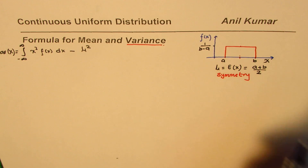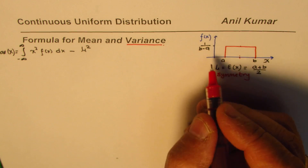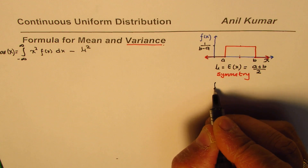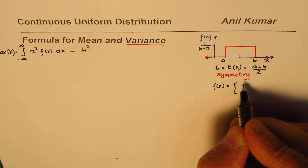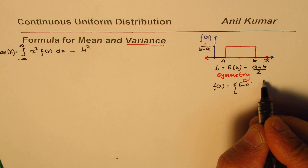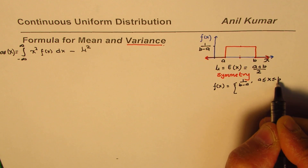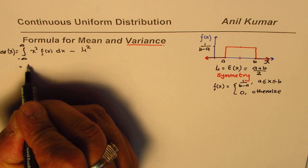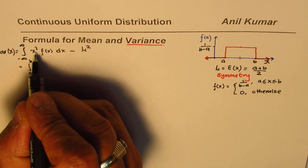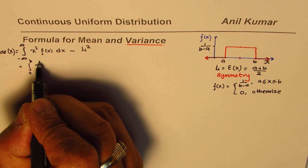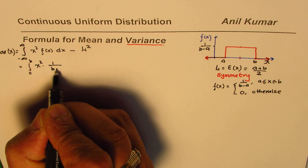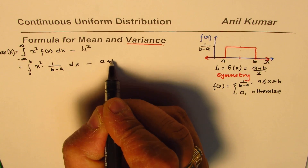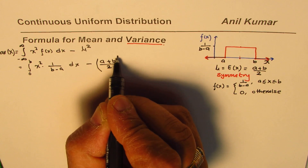In our case, the function f(x) is defined as 1/(b - a) when x is between a and b, and 0 otherwise. So the integral for variance reduces to the integral from a to b, because the function is 0 everywhere else. This becomes the integral from a to b of x² times 1/(b - a) dx, minus the mean squared, where the mean is (a + b)/2.